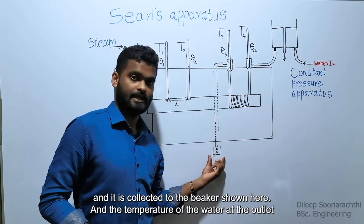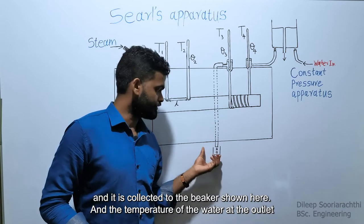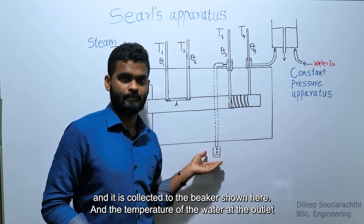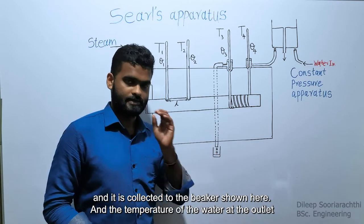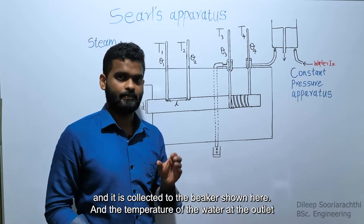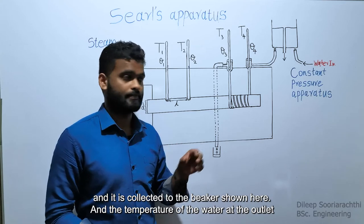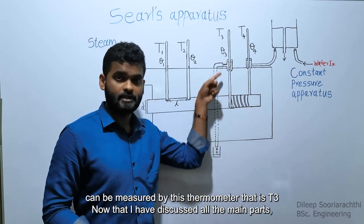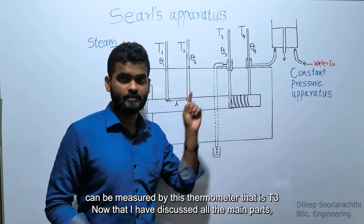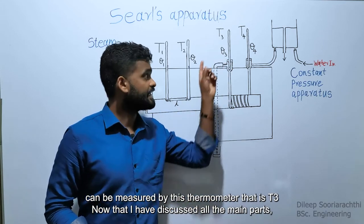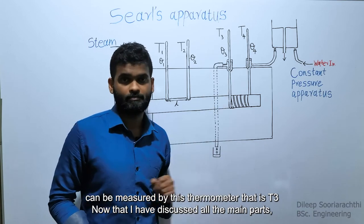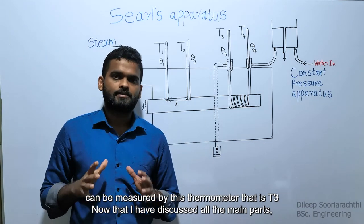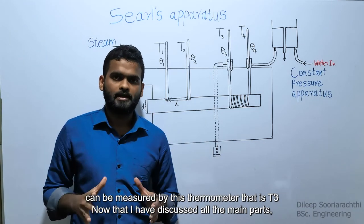The water is collected through this vessel, shown here, and the temperature of the water at the outlet can be measured by this thermometer. Now that I have discussed all the main parts, let's see how to measure the thermal conductivity using the apparatus.